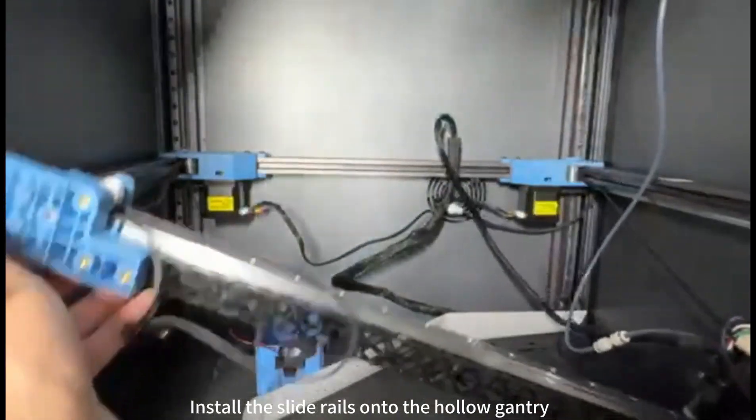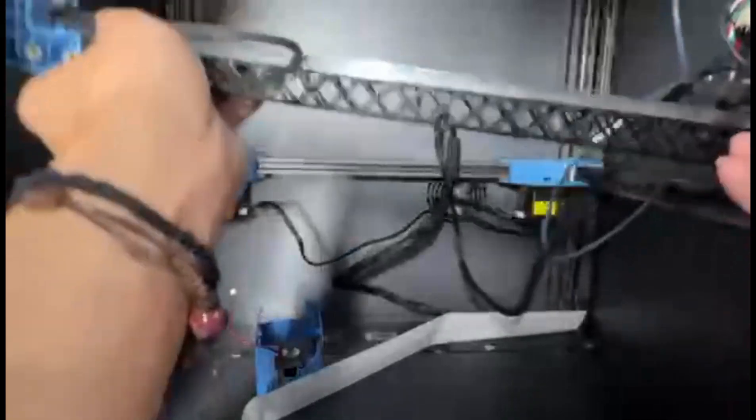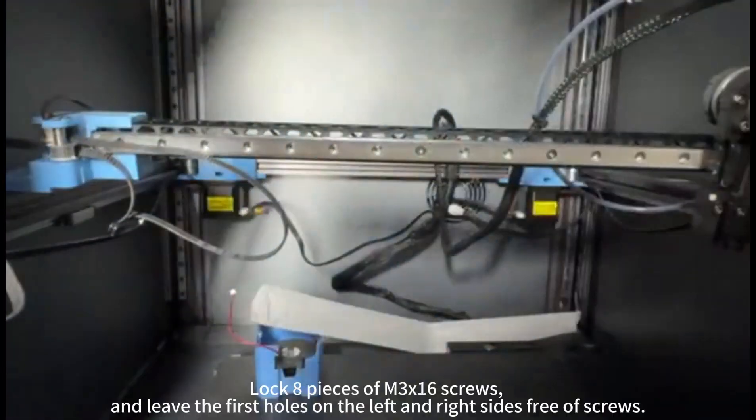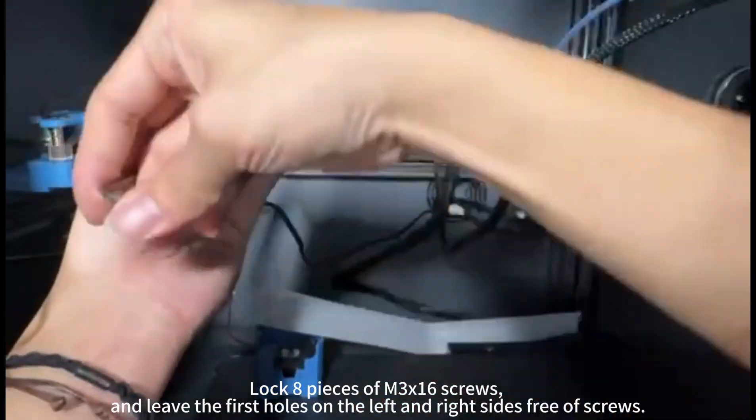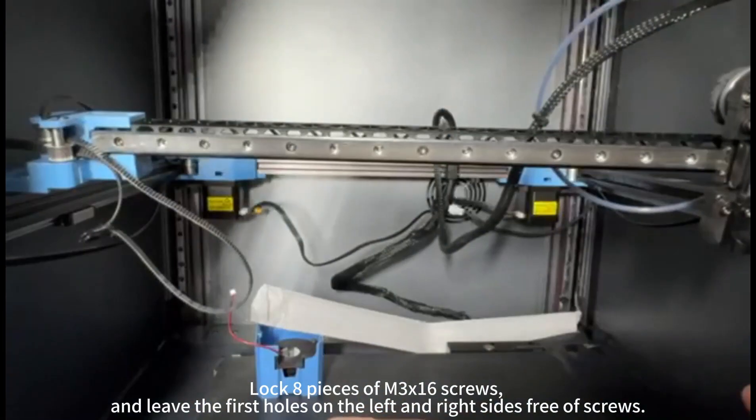Install the slide rails onto the hollow gantry. Lock eight pieces of M3 by 16 screws and leave the first holes on the left and right sides free of screws.